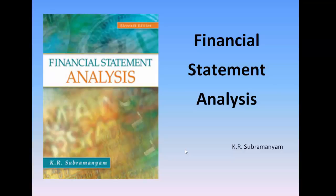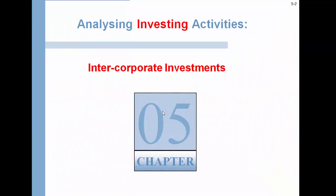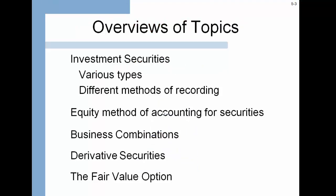Hello, welcome to Chapter 5 of Financial Statement Analysis. In this particular chapter, we're going to discuss intercorporate investments. Intercorporate investments take several forms. You have two different types: investment securities, different types of investment securities, different methods for recording them. We're going to talk in detail about the equity method of accounting securities, what happens with business combinations, which is really acquisitions and a few other things. We're going to touch on derivative securities, and then finally talk about the fair value option.